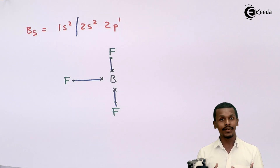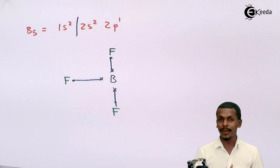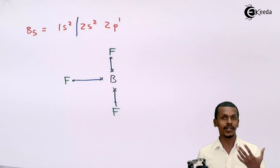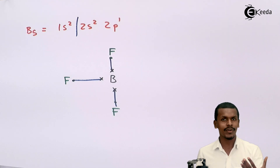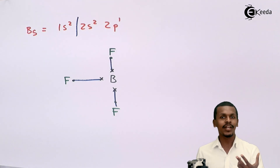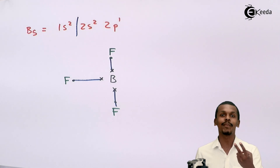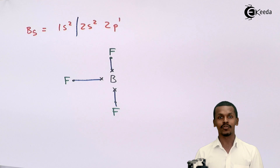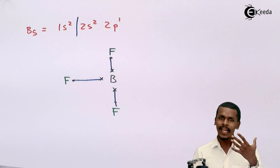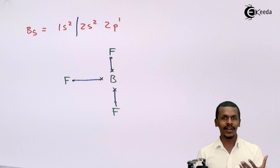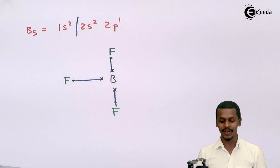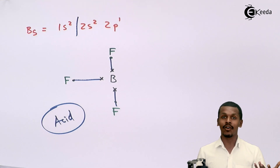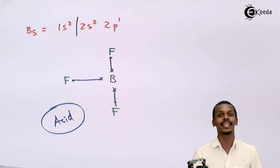BF₃, which has only six electrons around it, needs two more electrons to complete its octet. Those two electrons form a pair, so BF₃ can accept a pair of electrons to complete its octet. Since it accepts a pair of electrons, according to the Lewis acid concept it is called an acid. Any cation that can accept a pair of electrons can also act as an acid.